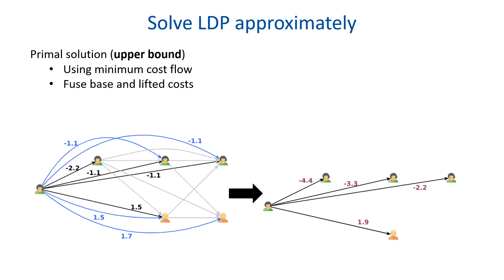Finally, in each iteration, we solve the primal solution using minimum cost flow with the graph created with the subproblems and the updated costs. For this, we also need to fuse the costs of base and lifted edges. You can see a scheme in the figure. We decrease the gap between the lower and the primal solution by increasing the lower bound and potentially decreasing the primal solution iteratively to find an approximate solution. Please have a look into the paper for more algorithmic details.